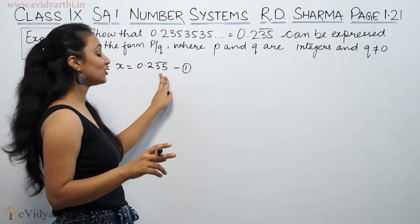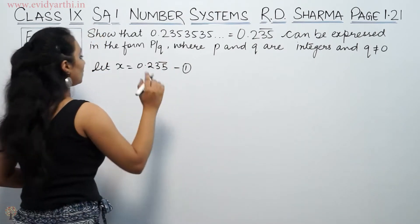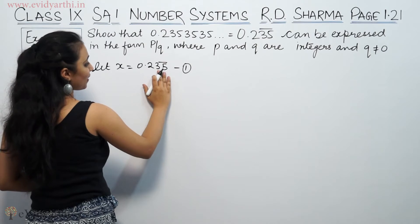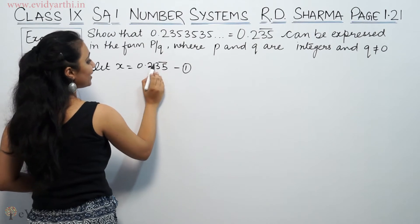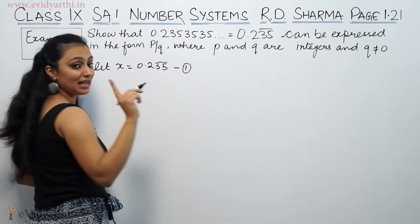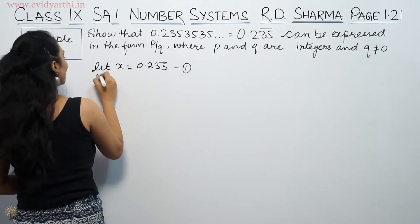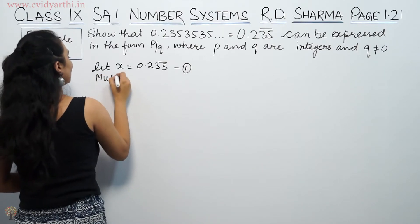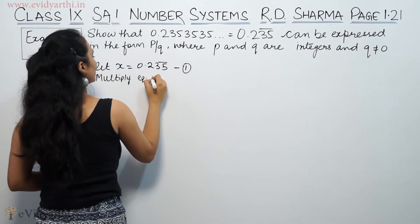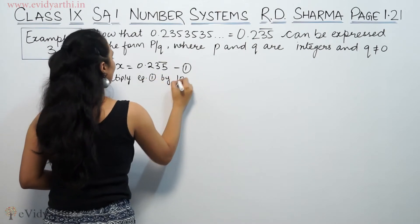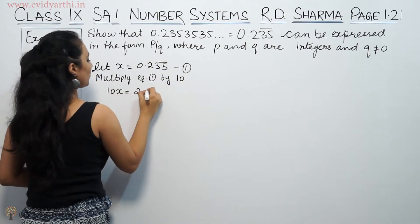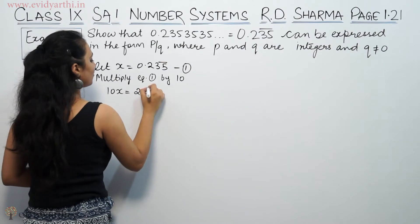The bar has two digits, so we multiply accordingly. After this decimal, it is just a bar. Let's shift the decimal — one place shift means we multiply equation 1 by 10. So multiplying by 10 gives: 10x = 2.35 bar.